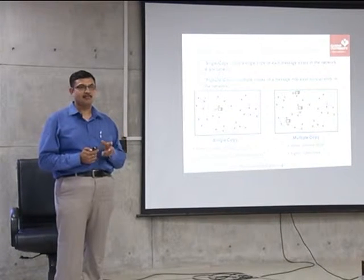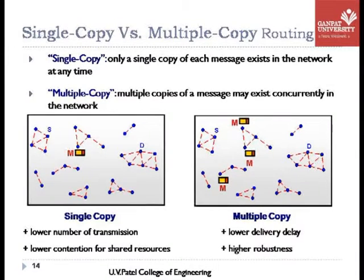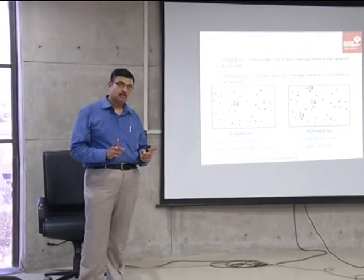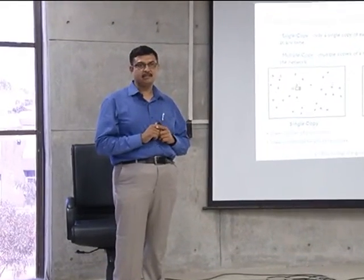What can we say about the delay in direct transmission? The delay may be maximum. Why? Because a delay tolerant network does not ensure end-to-end connectivity. The source cannot come into direct contact with the destination — it may be in contact with relay nodes, but relay nodes should not receive the packet. So delay is maximum, but transmission count is only one.